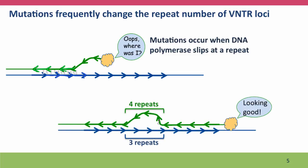It should have come back so that this repeat here was base paired with this repeat here. But instead, it came back one repeat over. And the result is that although the template strand had three repeats in this segment, the newly synthesized strand has four repeats. When the cell divides, the cell is going to inherit this mismatched section of DNA. And if the repair machinery doesn't correct it, a daughter cell is now going to have an extra repeat in its array of repeats.